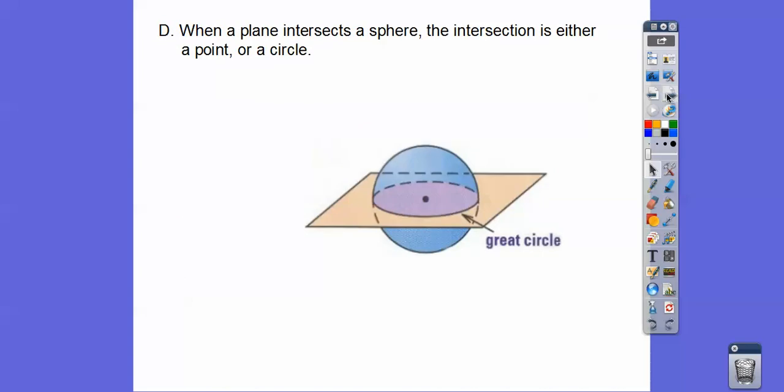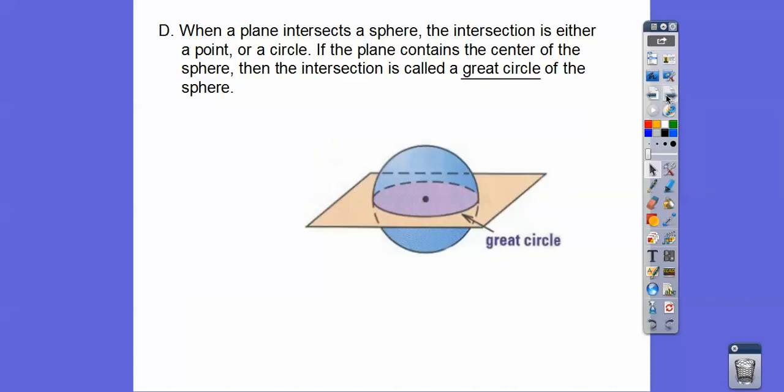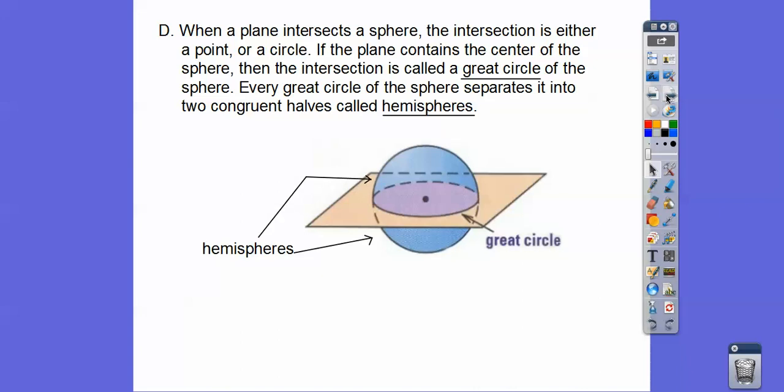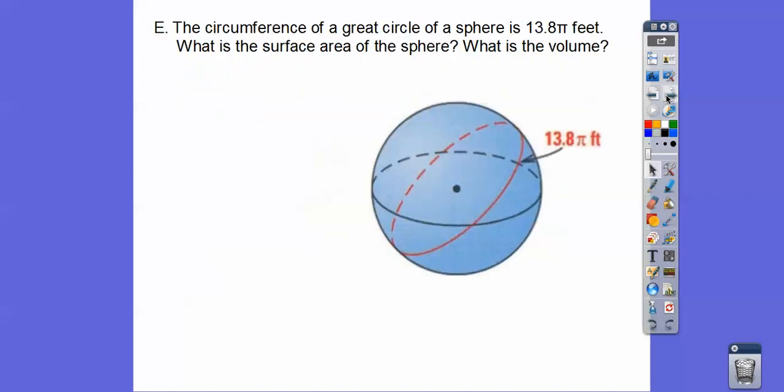So when a plane intersects a sphere, the intersection is either a point or another circle. Imagine a plane slicing this sphere. It's always going to give us this circle right here, and if it goes through the center of the circle, it's called the great circle. And then so every great circle of a sphere separates the two congruent halves into what's called hemispheres. They're just half of a sphere.